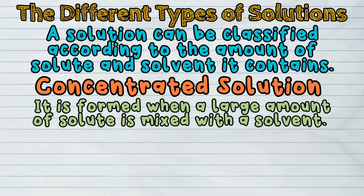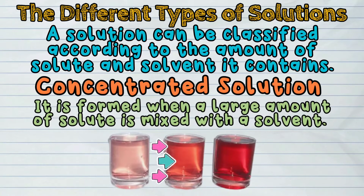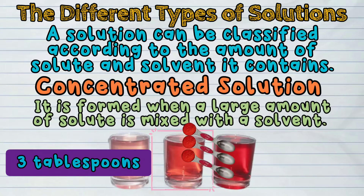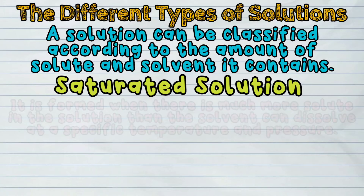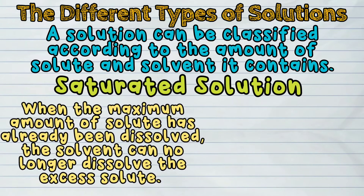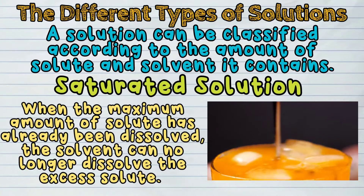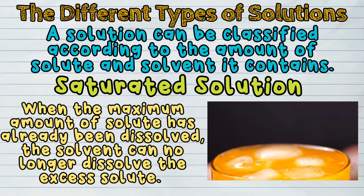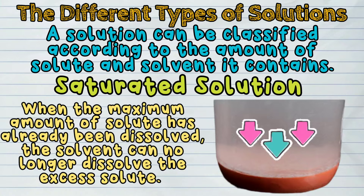A concentrated solution is formed when a large amount of solute is mixed with a solvent. When three tablespoons of powdered juice are dissolved in a glass of water, a concentrated solution is formed. A saturated solution is formed when there is much more solute in the solution than the solvent can dissolve at a specific temperature and pressure. When the maximum amount of solute has already been dissolved, the solvent can no longer dissolve the excess solute. Thus, some solid particles settle at the bottom of the container.